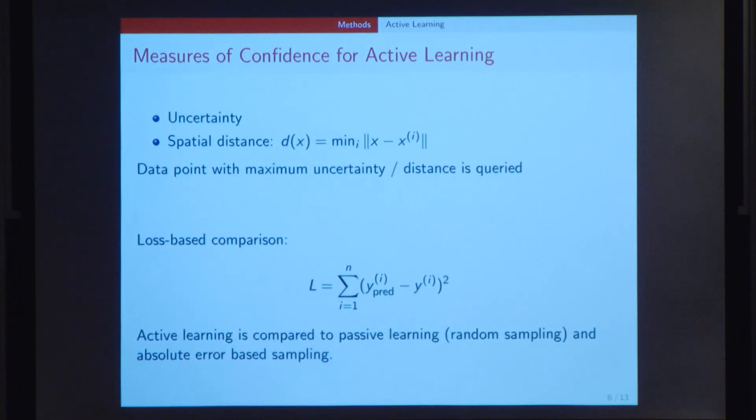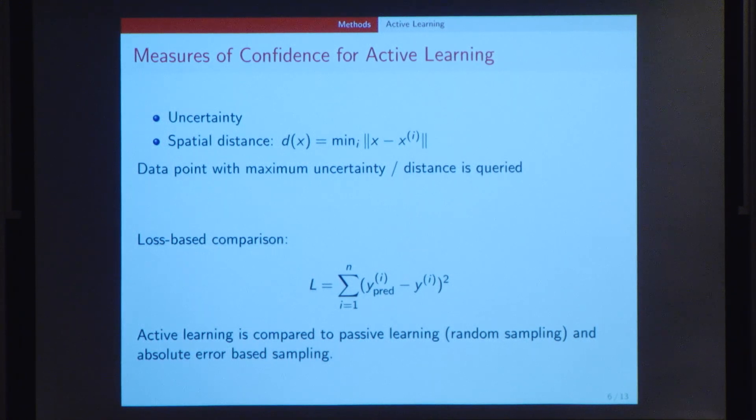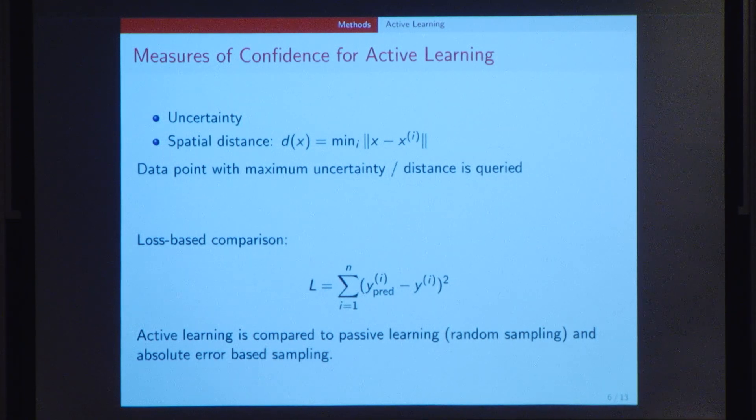As I mentioned earlier, active learning requires certain measures of confidence to know which data points it's the most and least confident about. There are many ways of measuring this confidence, two of which we have used in our study. The first one is uncertainty, which, as I explained earlier, is output by the Gaussian process regressor. The second one is spatial distance. This effectively provides you with the extent of isolation of a particular point.